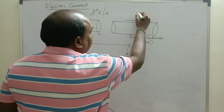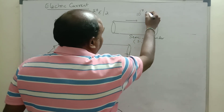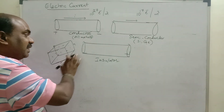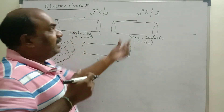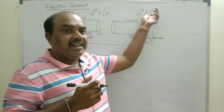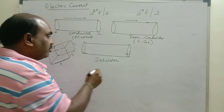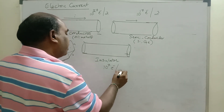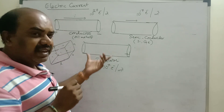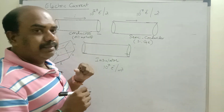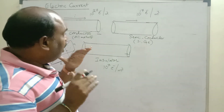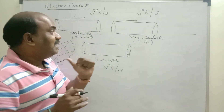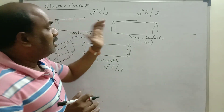In semiconductors, only 10 to the power 17 free electrons are present per cubic meter. In insulators, only 10 to the power 7 free electrons are present per cubic meter — that means a very less number of free electrons. From this concept, two famous scientists proposed how current flows in a conductor, why insulators do not behave as conductors, and why moderate current passes through a semiconductor.